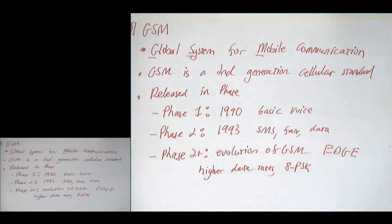Phase two plus was not called phase three because this was happening right around the development of 3G, the third-generation wireless system. They didn't want to call it phase three because it wasn't going to be a 3G cellular standard. The standard after GSM was Wideband CDMA. We're going to talk about GSM because it uses TDMA — Time Division Multiple Access — which is similar to a lot of what we've discussed at the beginning of class.